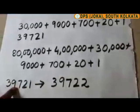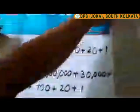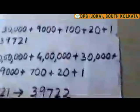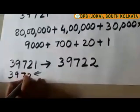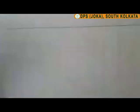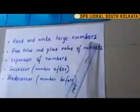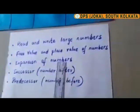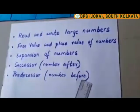Similarly, the number before 39,721 — before 1 comes 0, so we place a 0 in the ones house. The number before 39,721 is 39,720. So children, to sum up, what we have learned today is to read and write large numbers, the face value and place value of numbers, expansion of numbers, and successor meaning the number after and predecessor meaning the number before.